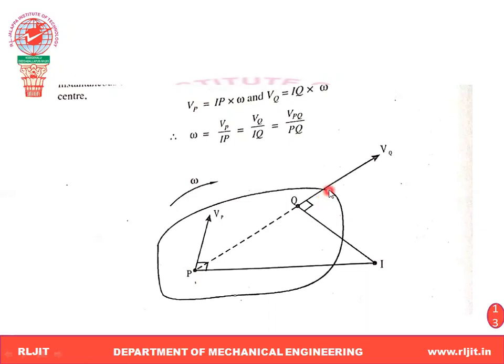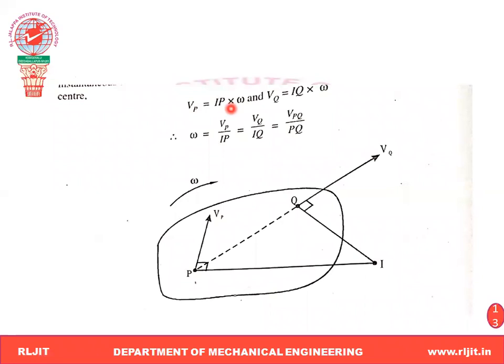Using the instantaneous center method, we can find the absolute velocity as well as the angular velocity at any point on any link of a mechanism. The key relation to memorize is: V = distance from instantaneous center × angular velocity (ω). We will apply this in the upcoming problems.